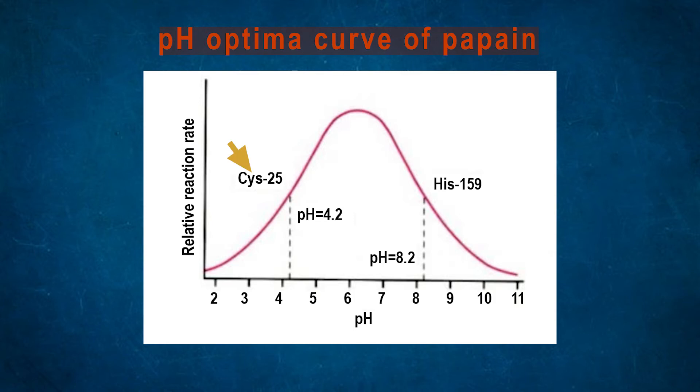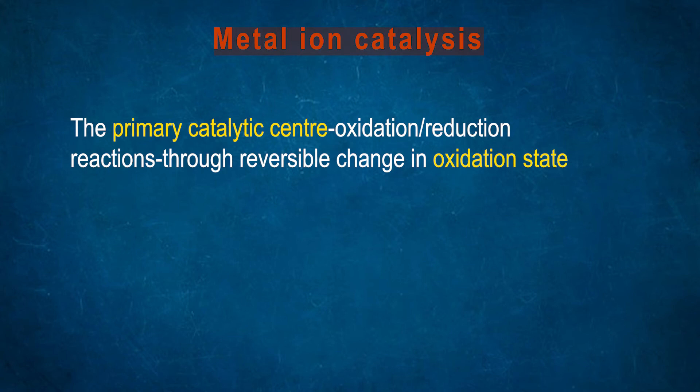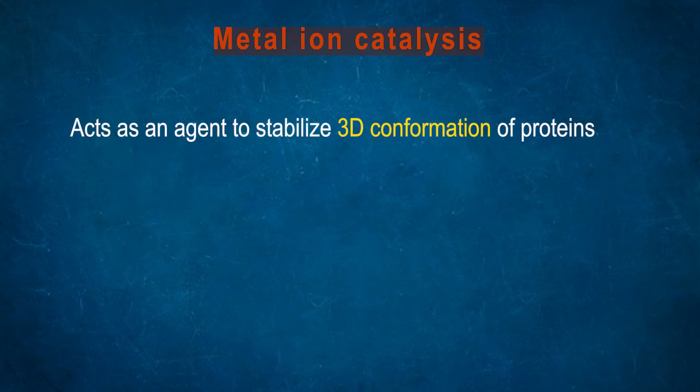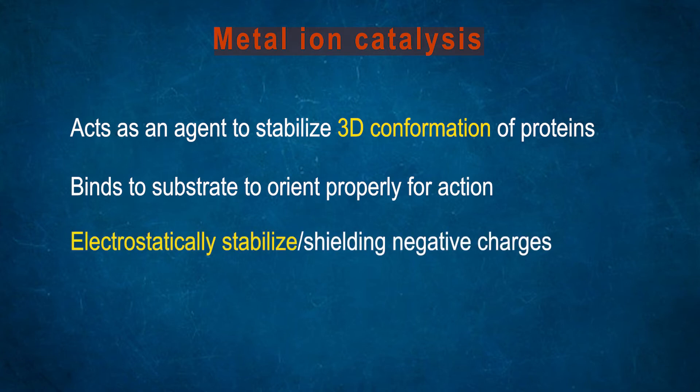It needs the presence of cysteine-25 and histidine-159. Metal-ion catalysis: Metal ions act as primary catalytic centers. Oxidation or reduction reactions happen within the enzyme by the help of metal ions through reversible changes in the oxidation states of the metals. It acts as a bridging group to bind enzyme and substrate to stabilize the ES complex. It acts as an agent to stabilize the 3D conformation of proteins. It binds to substrate to orient properly for action and electrostatically stabilizes by shielding negative charges.